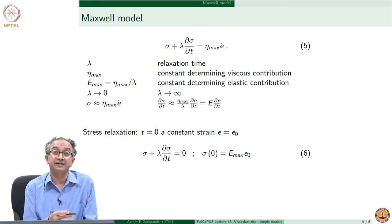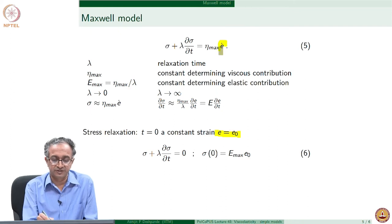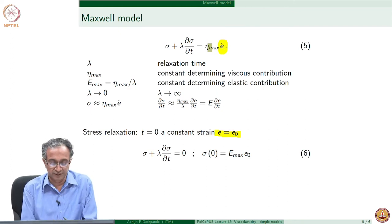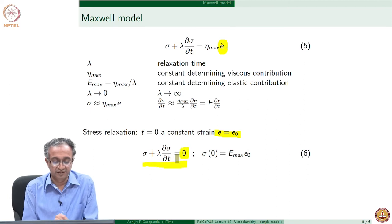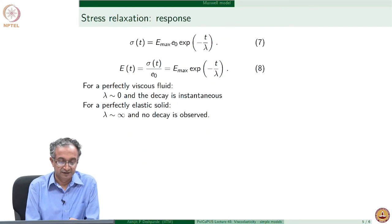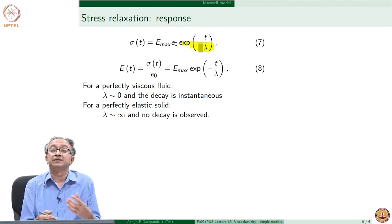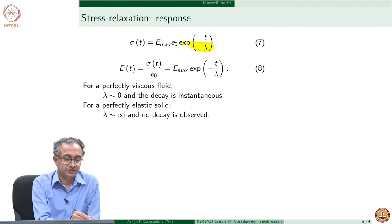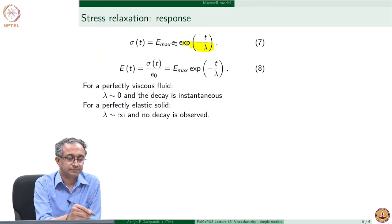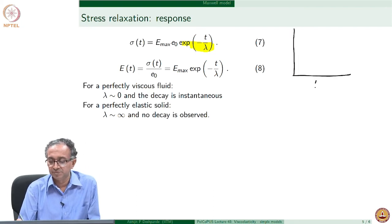Let us look at what happens to the Maxwell model in a stress relaxation experiment. Since strain is constant, the strain rate term ε̇ goes to 0. We therefore have an ordinary differential equation in σ equal to 0, and the solution is an exponential decay. The decay rate depends on the magnitude of λ: if λ is very large, the decay will be much slower, and the curves drawn with increasing λ show more and more elastic-like response.